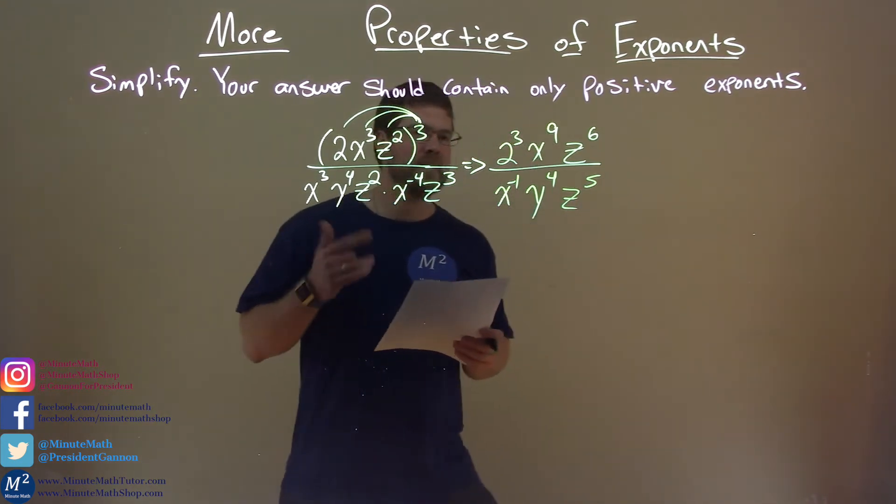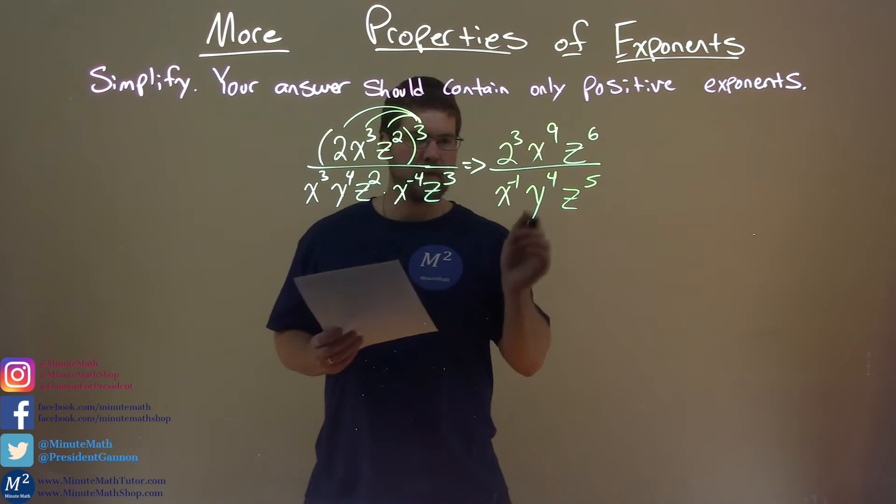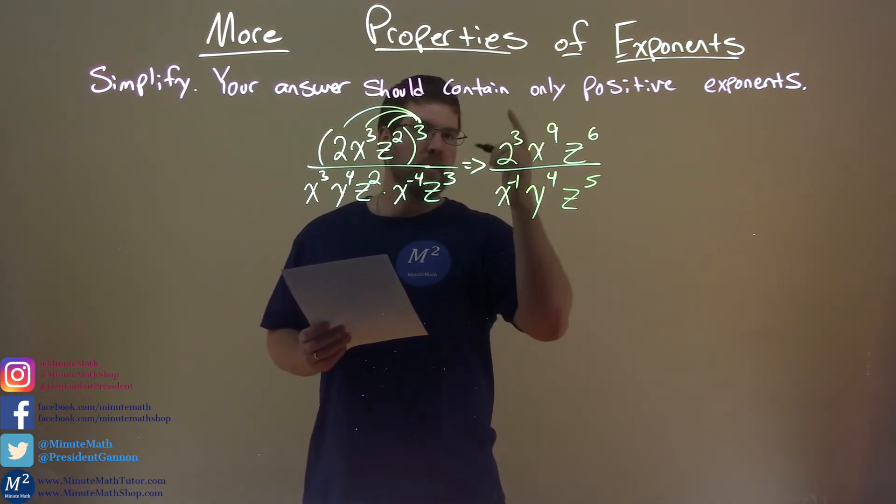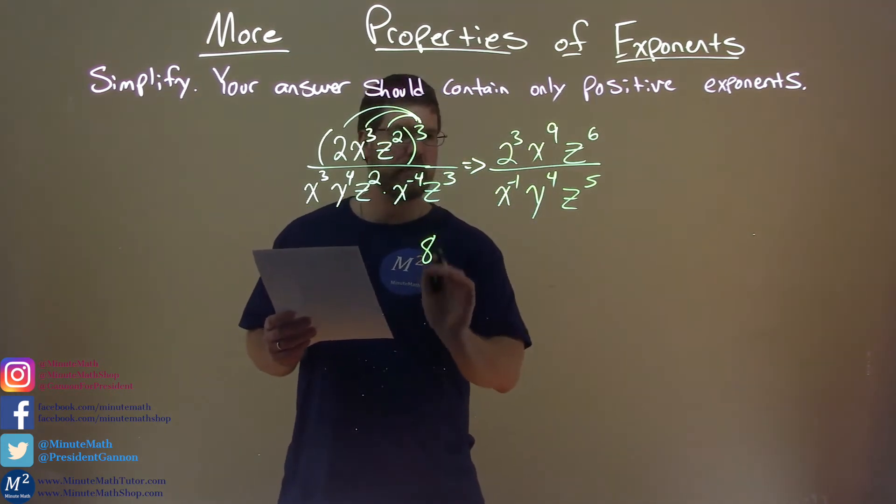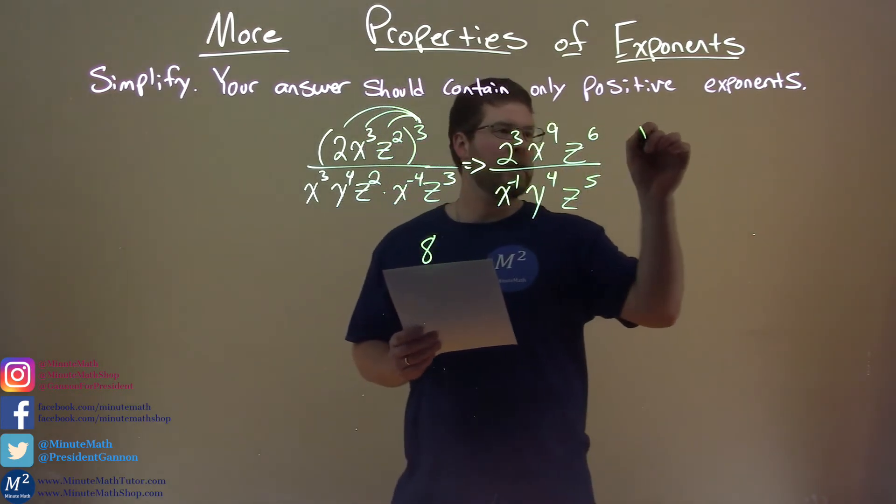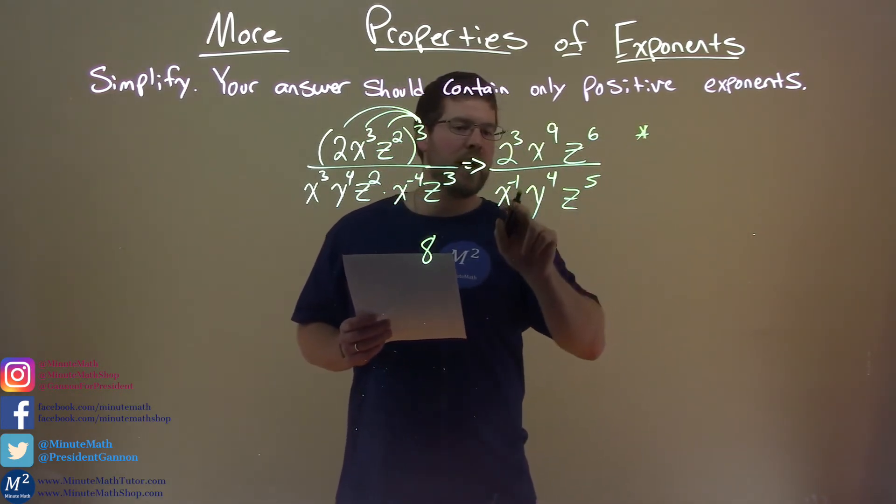So, now, let's see where we can go. We go with our rules here. Simplify. 2 to the third power, 2 times 2 is 4, times 2 is 8. Now, this one's tricky. We have x to the ninth and x to the negative one.